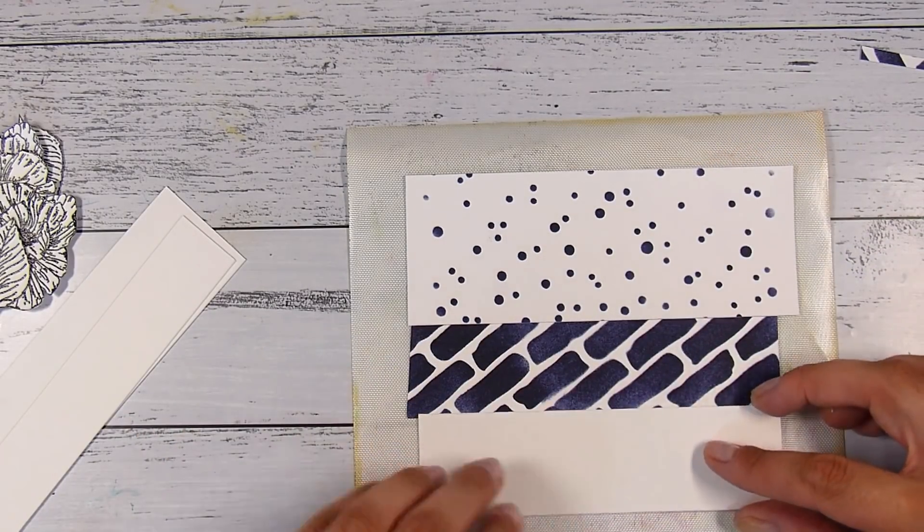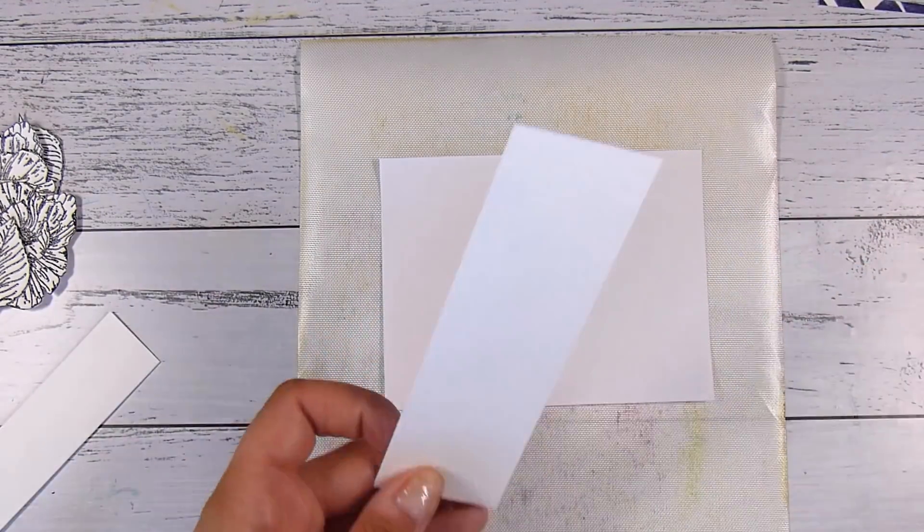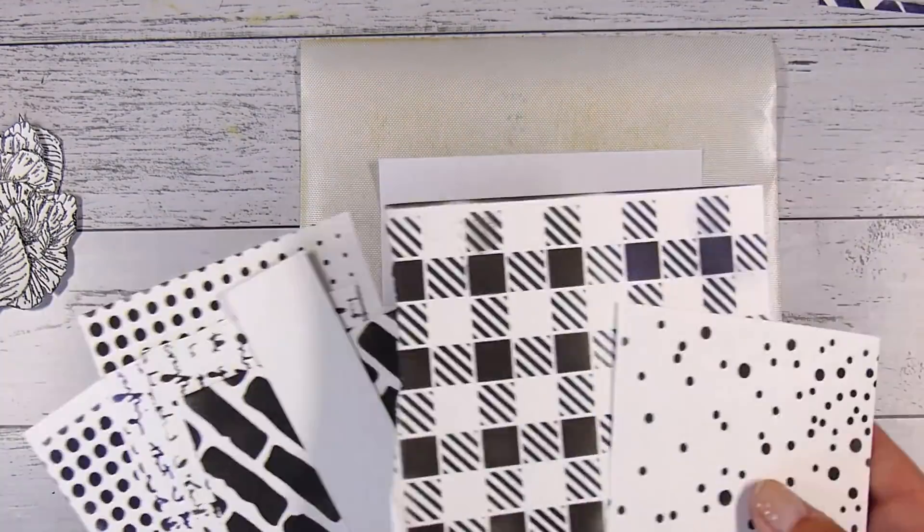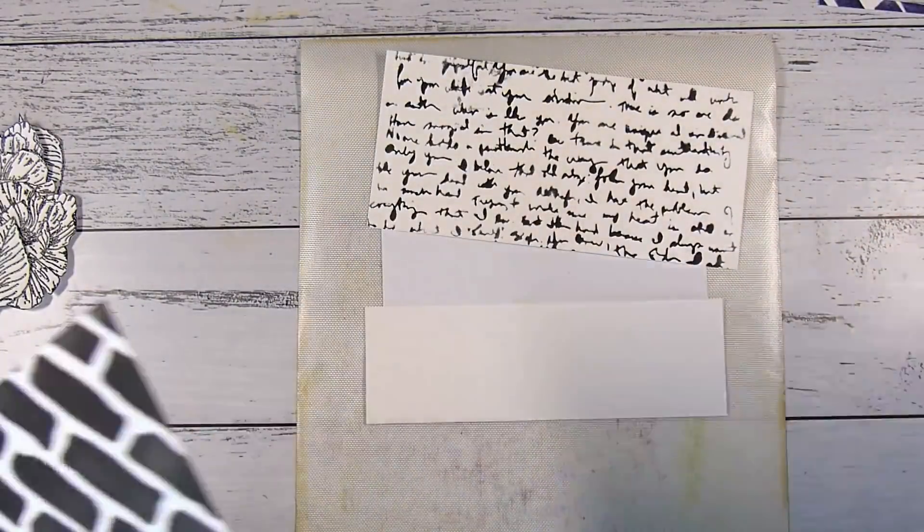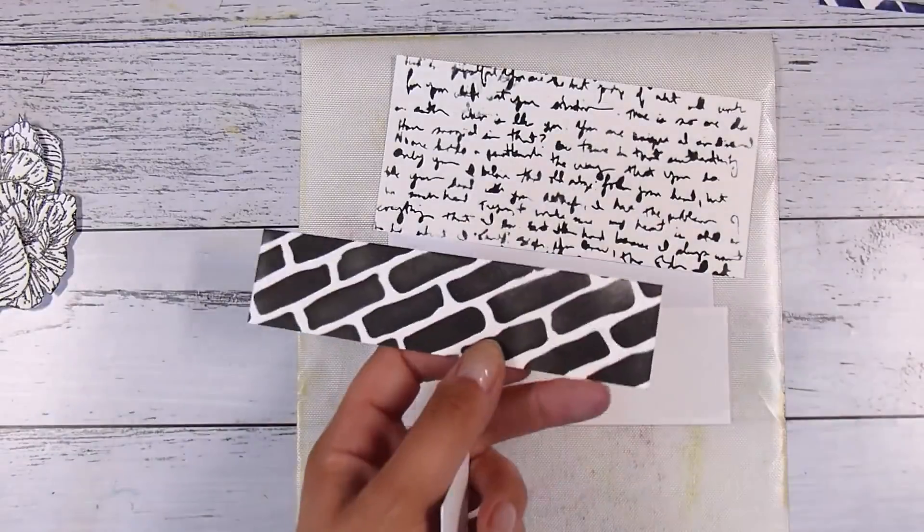From here it would have been smart if I had gotten out my stacking rectangle dies and probably cut out a rectangle from the center. But just because it was nice and easy, I actually just cut these using my trimmer.